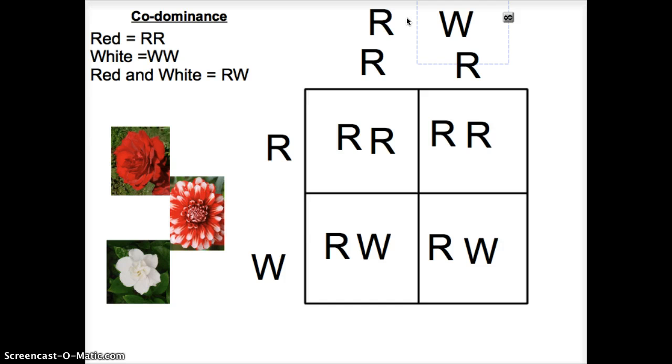So that's incomplete and co-dominance right there. Incomplete they blend together, co-dominance they are both shown. Otherwise the rules are pretty similar.